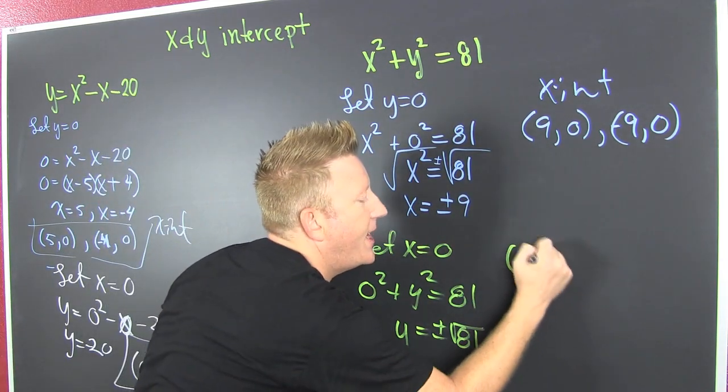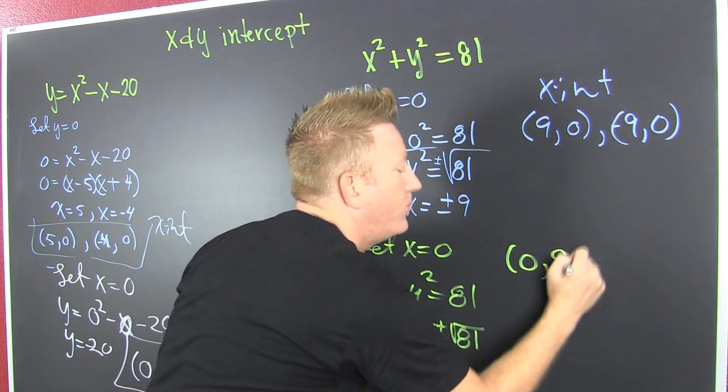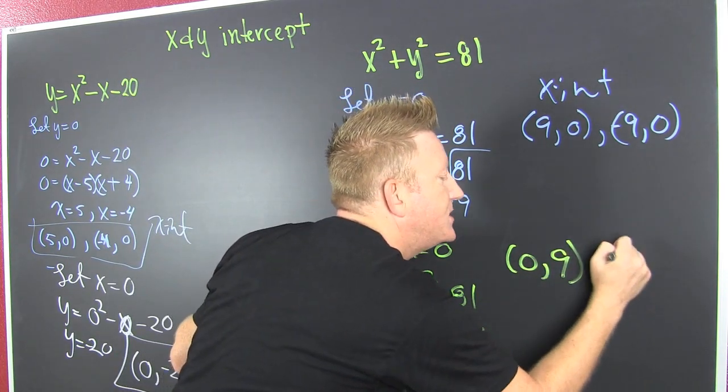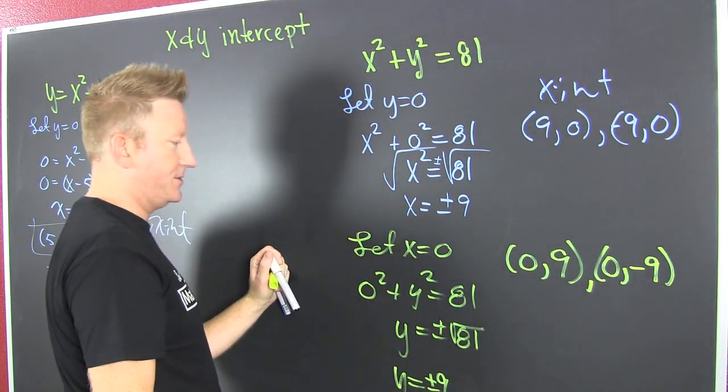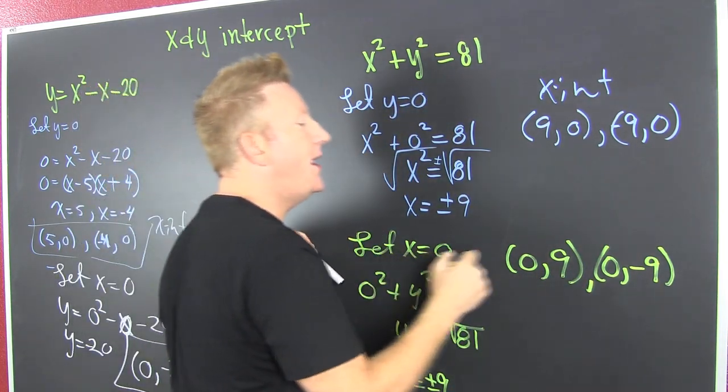So, what's that say? When x is 0, y is 9. What else? When x is 0, y is minus 9. Fine! What is that? That's the y-intercept.